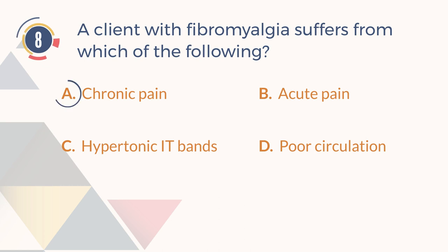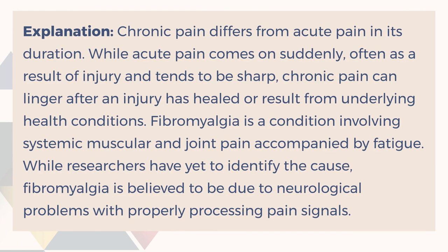The correct answer is A. Chronic pain. Explanation: Chronic pain differs from acute pain in its duration. While acute pain comes on suddenly, often as a result of injury, and tends to be sharp, chronic pain can linger after an injury has healed or result from underlying health conditions. Fibromyalgia is a condition involving systemic muscular and joint pain accompanied by fatigue. While researchers have yet to identify the cause, fibromyalgia is believed to be due to neurological problems with properly processing pain signals.